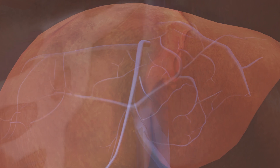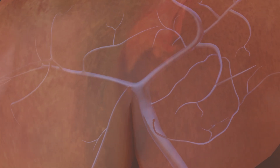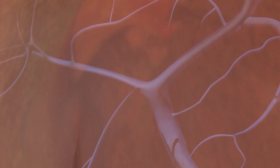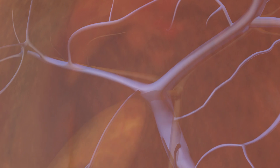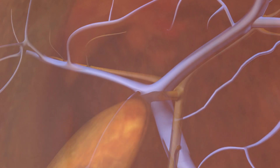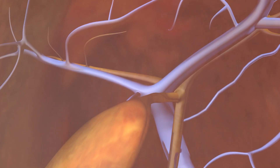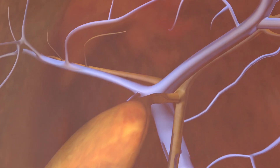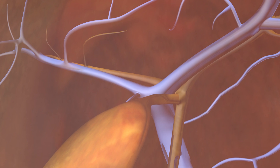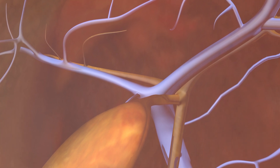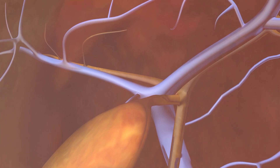The portal vein divides in the liver into the left and right portal veins. The intrahepatic bile duct and the hepatic artery branch also accompany the branches of the portal vein. This is the reason that the walls of the portal vein appear brighter or more echogenic than the walls of the hepatic veins.